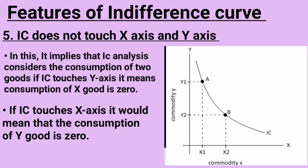The final feature is that the Indifference Curve does not touch the X-axis or Y-axis. This implies that the IC considers the consumption of two goods simultaneously. If the IC touched the Y-axis, it would mean the consumption of good X is zero; if it touched the X-axis, consumption of good Y would be zero. These are the important properties and features of the Indifference Curve.